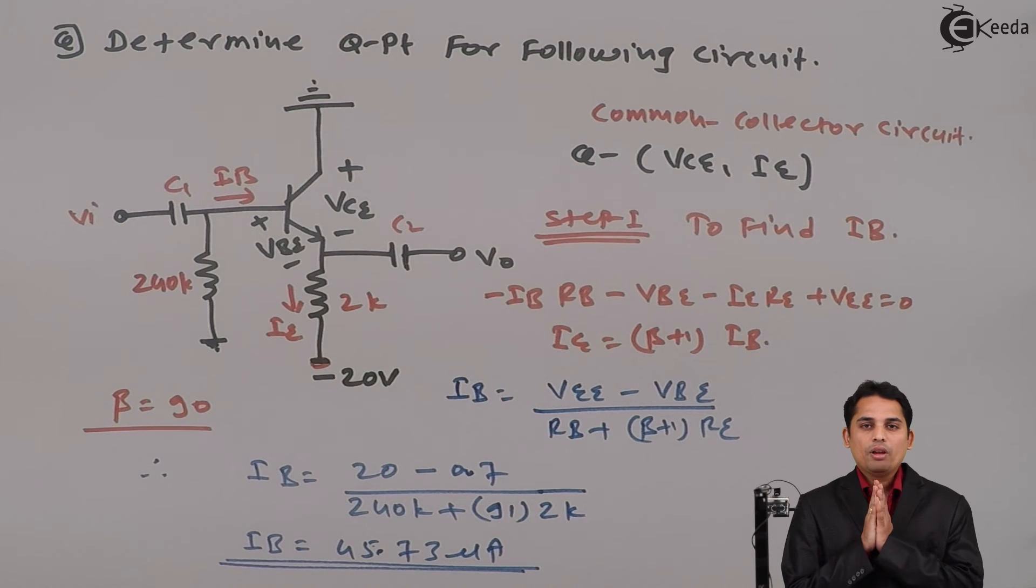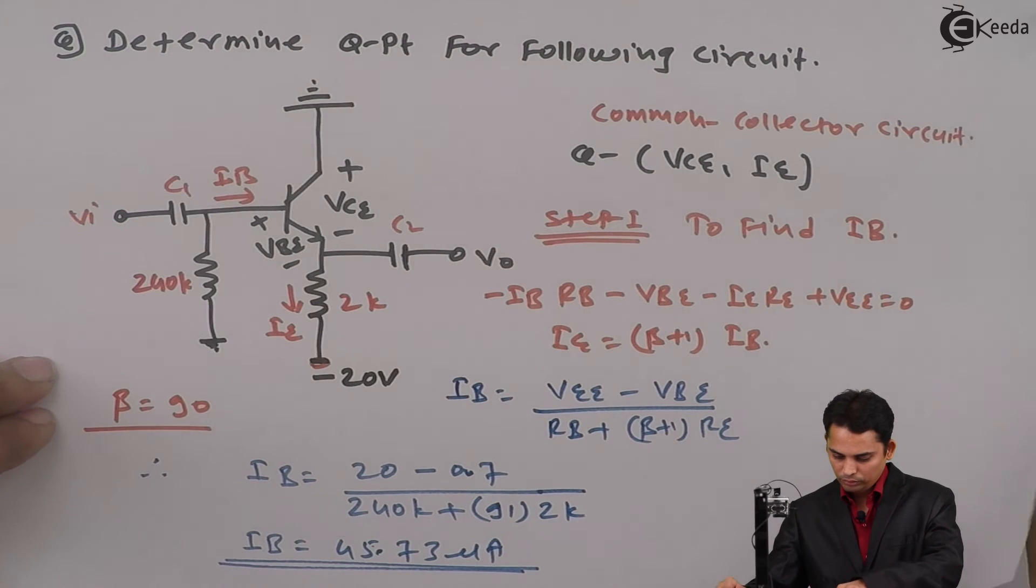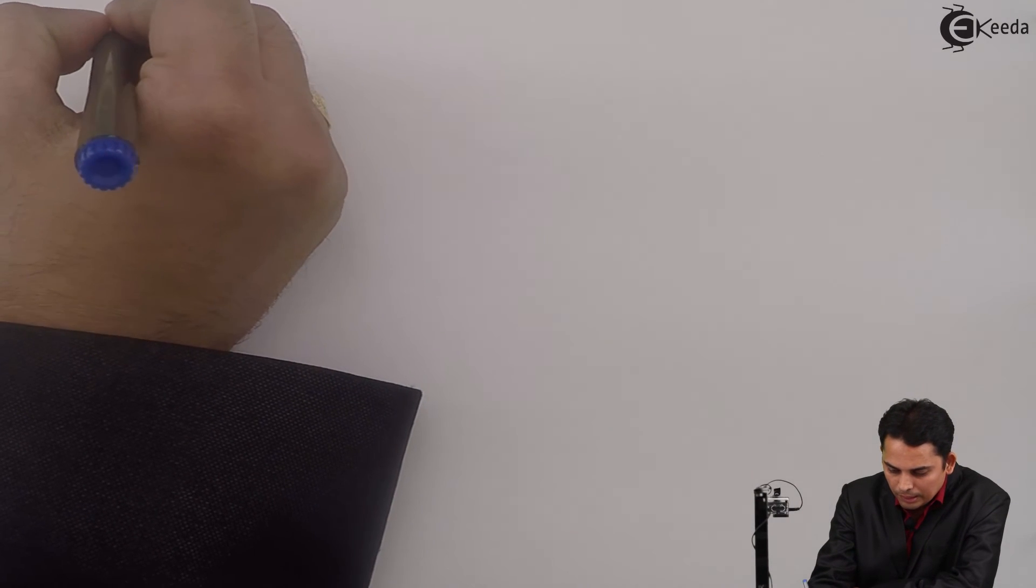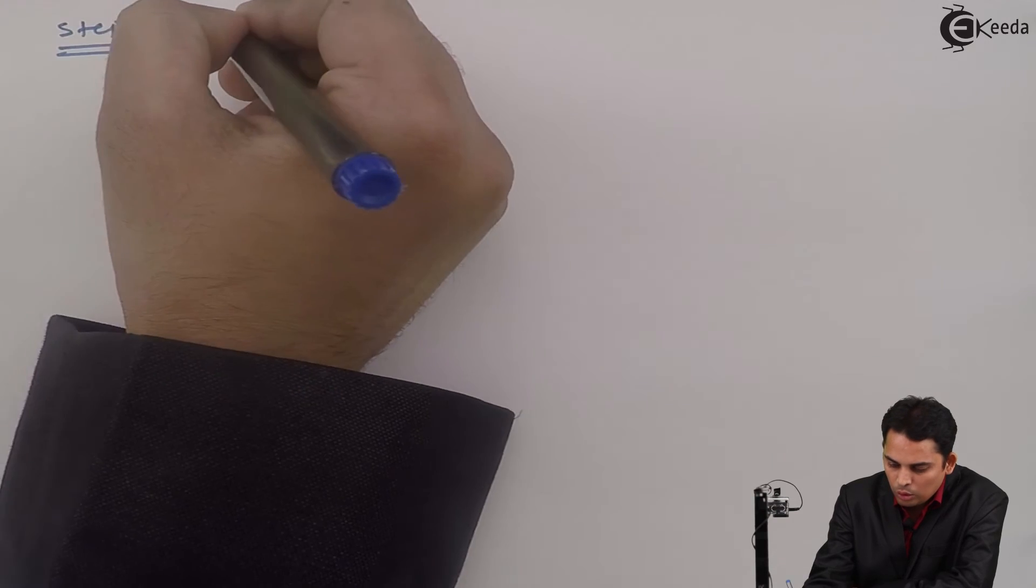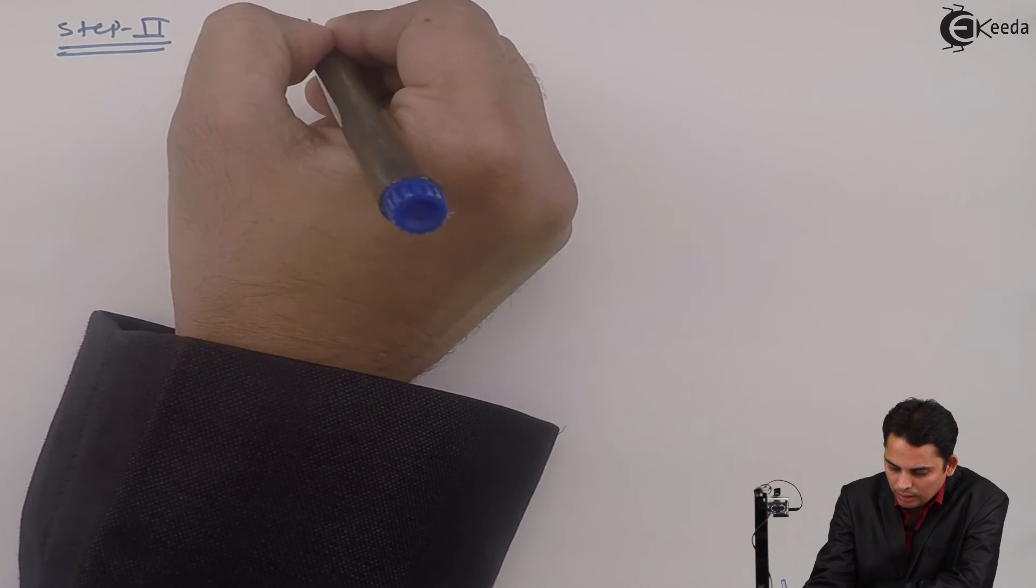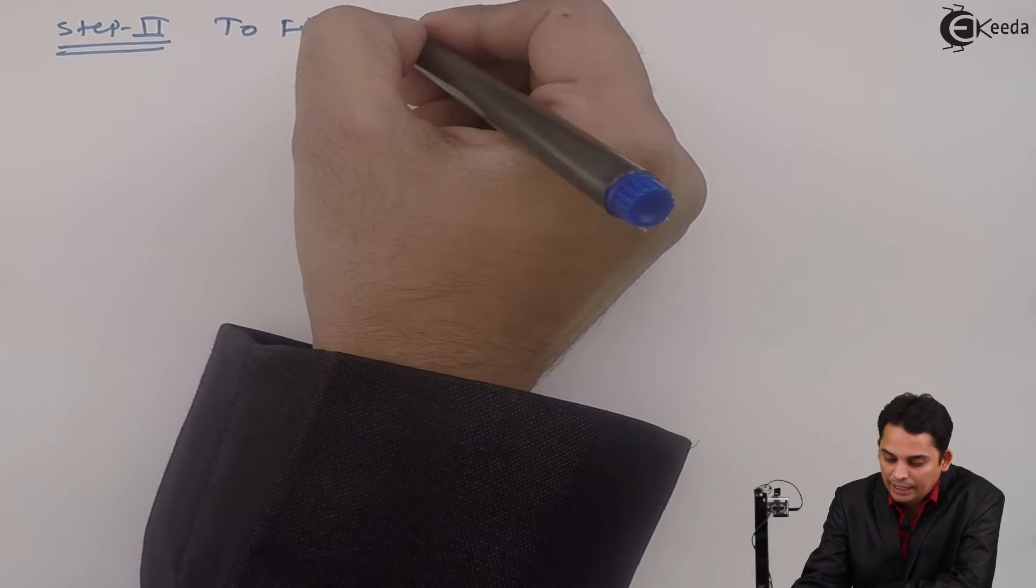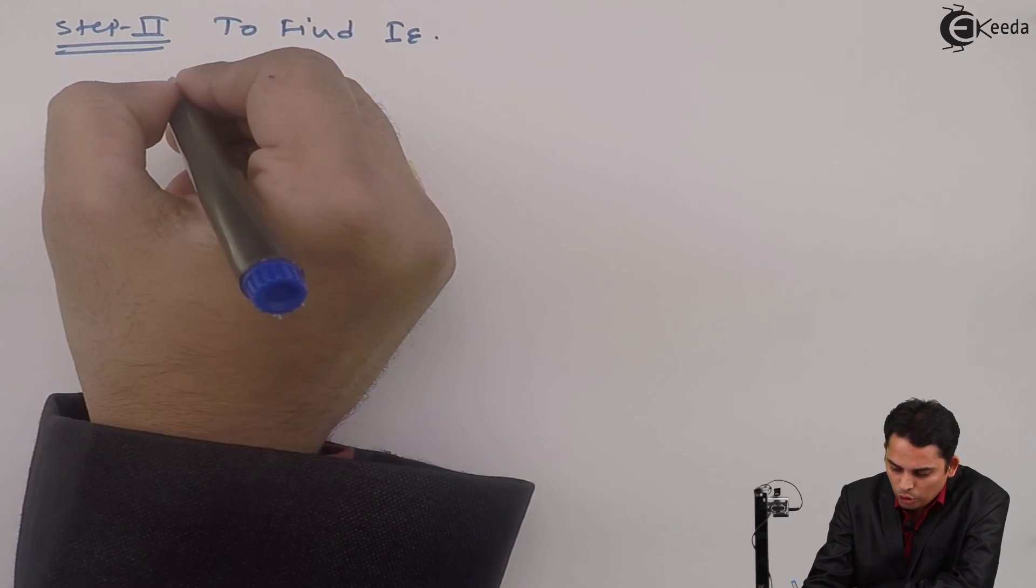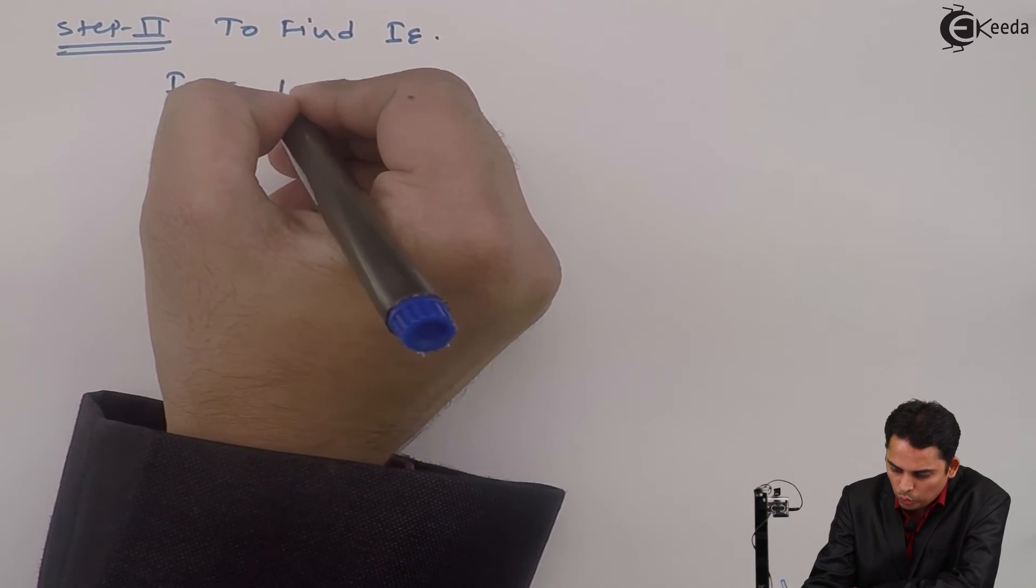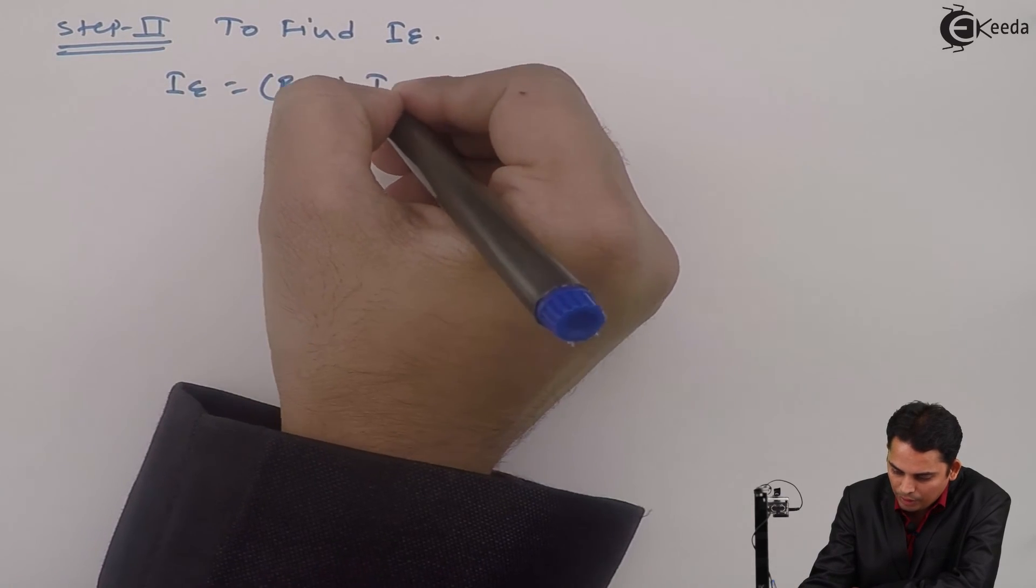So from step 1 we have got base current IB. Step 2 will be to find out emitter current IE. We know that IE is equal to beta plus 1 times IB.